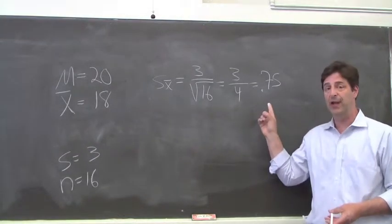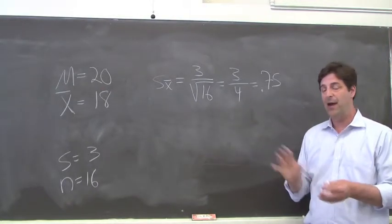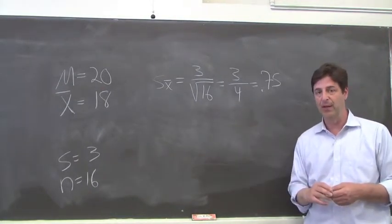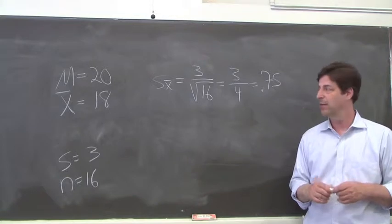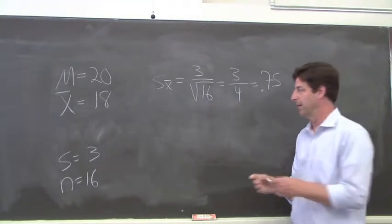Okay, so now that we've calculated our standard error of the mean of 0.75, we can now plug that into our t-formula to calculate a t-value. We just take the sample mean minus the population mean and divide by the standard error.